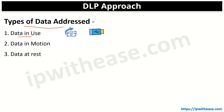The second type is data in motion. Examples include emails, file transfers, etc. This is also called data in transit, moving between two assets such as storage devices over the internet or a private network. While in motion, data is vulnerable, hence the need for DLP becomes paramount.